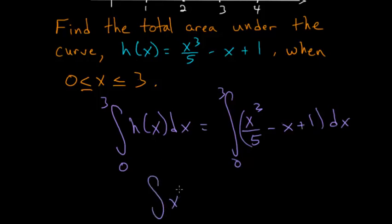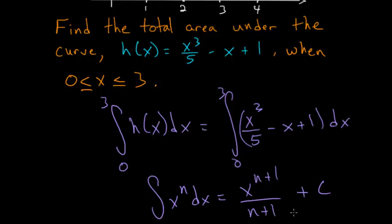The power rule states: if we have the integral of xⁿ with respect to x, we increase the exponent by 1 and divide by the new exponent. With indefinite integrals, you always add a constant. You can verify this by taking the derivative — bring the exponent down and multiply, subtract the exponent by 1, and the (n+1) terms cancel, leaving xⁿ. The derivative of the constant c is 0, since a constant's rate of change is always zero.